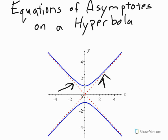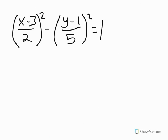And we're going to work on how to find the equation of those today. Okay, so let's say that the equation we're given for the hyperbola is (x-3)/2 squared minus (y-1)/5 squared equals 1.